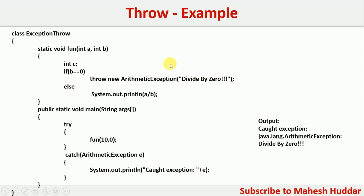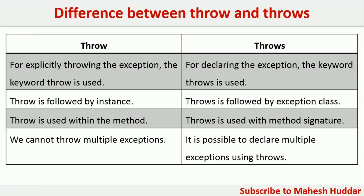So this is a simple program demonstrating the use of the throw keyword in Java. To quickly summarize the difference between throw and throws: throw is used for explicitly throwing an exception within a method, while throws is used to list the exceptions which may be thrown by a method. throw is followed by an instance — the new keyword is used to instantiate an exception class — whereas throws is followed by a list of exception class names. throw is used within a method; throws is used along with a method signature. We cannot throw multiple exceptions with throw, but it is possible to declare multiple exceptions using throws.